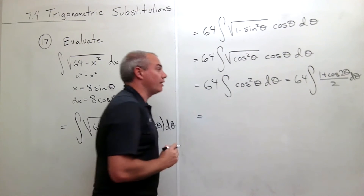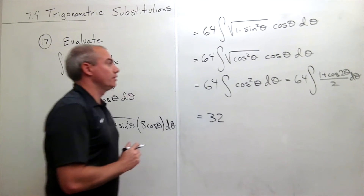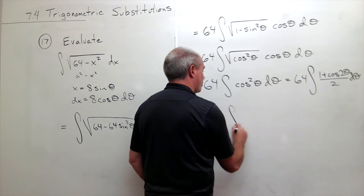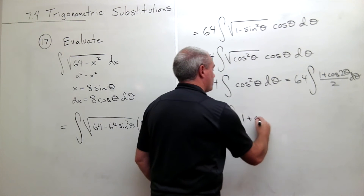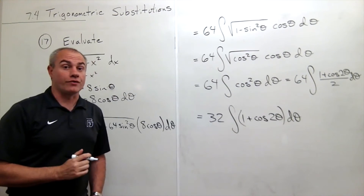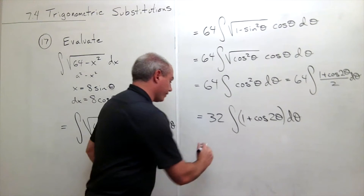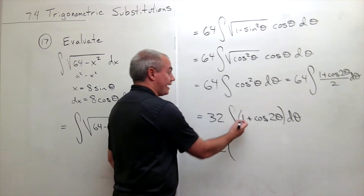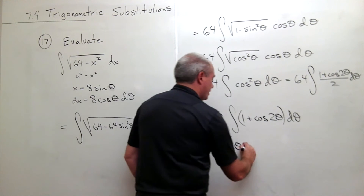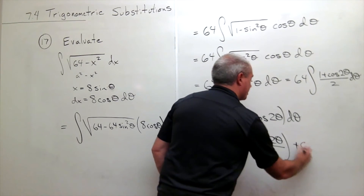I used the half angle identity there. I can bring the one-half out with the 64 and make that a 32. So I get 32 times the integral of 1 plus cosine 2 theta d theta. Taking the antiderivative, I get 32 times: the antiderivative of 1 is theta, and the antiderivative of cosine of 2 theta is sine of 2 theta divided by 2, plus C.